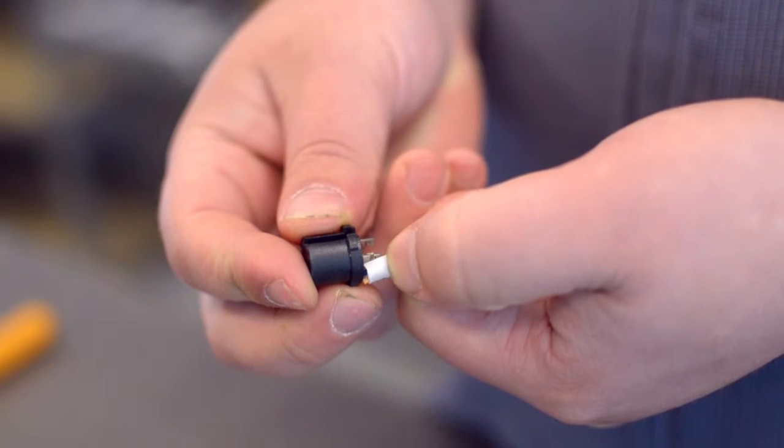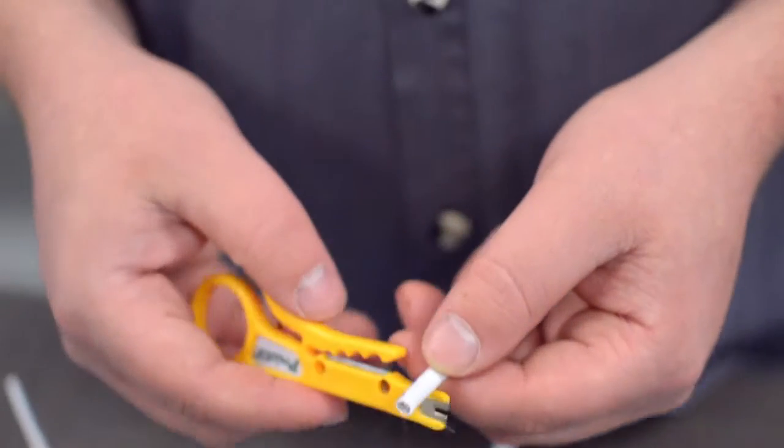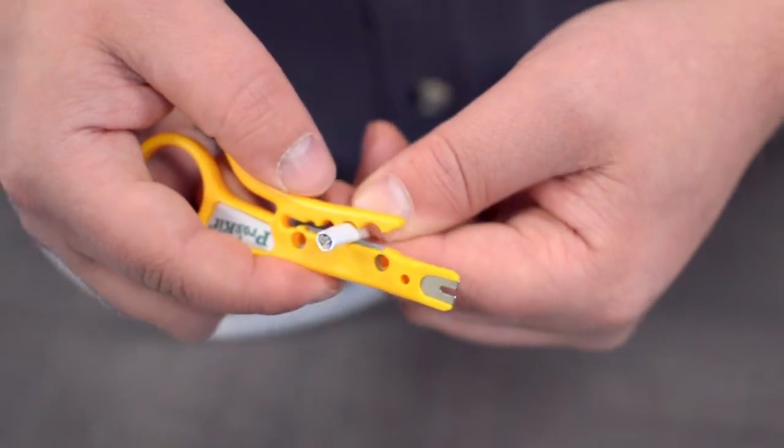Measure how far you will need to strip back the jacket by holding the cable up against the base of the connector. Then, strip the cable jacket using the wire strippers.